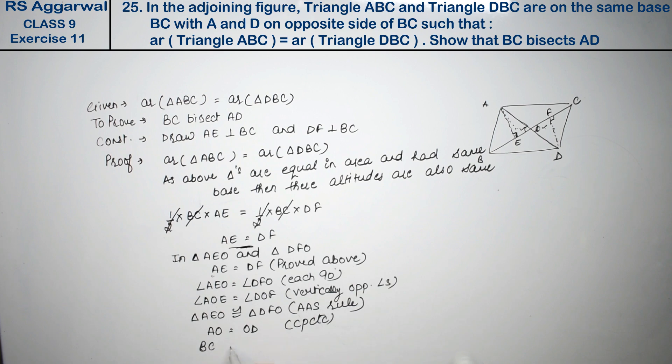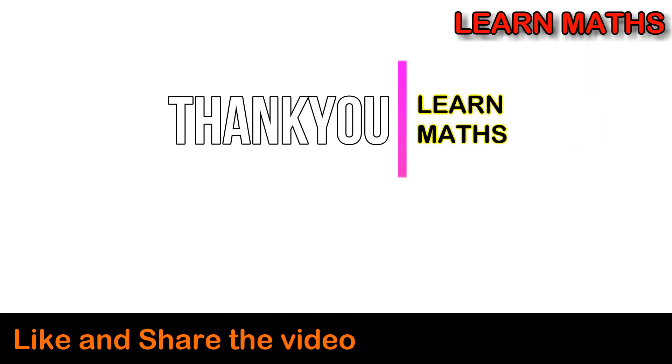So if these two are equal by CPCT, we can easily say that BC bisects AD. Answer. Thank you. If you understand the step-by-step solution of this video, please subscribe my channel and share it with your friends. Thank you.